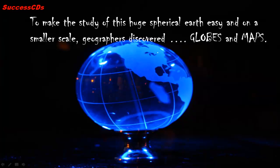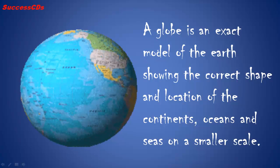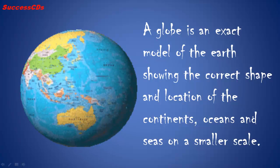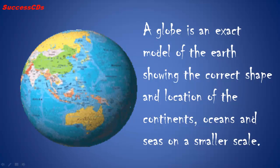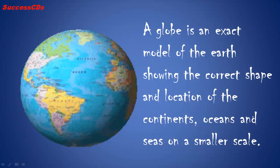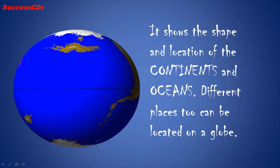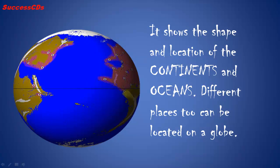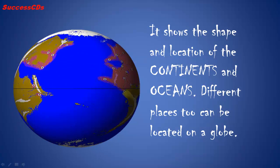To make the study of this huge spherical Earth easy and on a smaller scale, geographers discovered globes and maps. A globe is an exact model of the Earth showing the correct shape and location of the continents, oceans and seas on a smaller scale. It shows the shape and location of the continents and oceans, and different places too can be located on a globe.